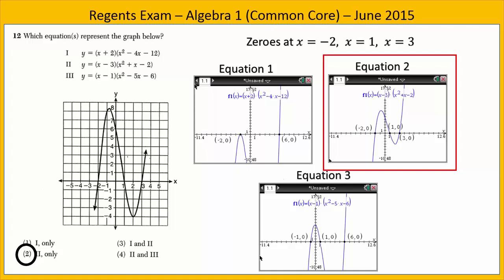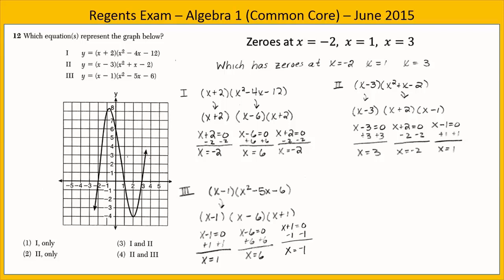For an algebraic method, we take each equation and factor the trinomial. We end up with factors that identify the zeros — set each equal to zero and determine which has zeros at negative 2, 1, and 3. Choices 1 and 3 do not have the correct zeros, so they can't represent the graph. Choice 2 does, and again choice 2 is our answer.